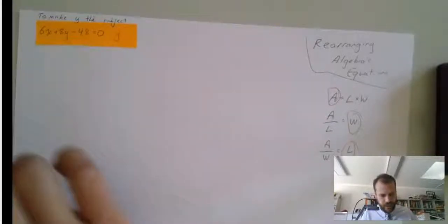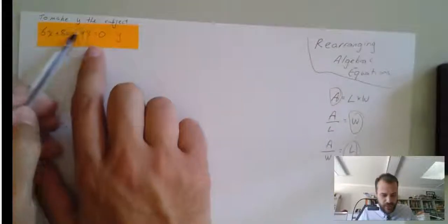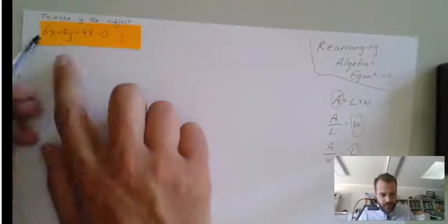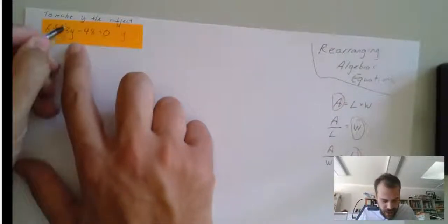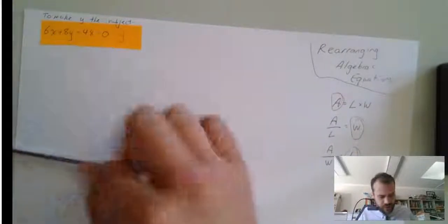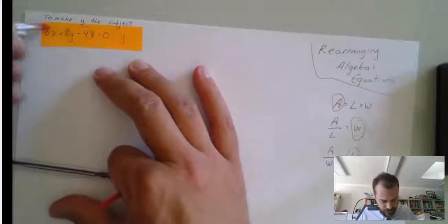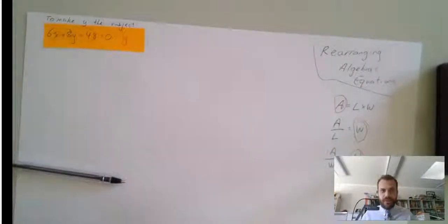We need to make y the subject, so we need to move this negative 48 to the other side, we need to get rid of the 6x onto the other side, and we need to get rid of the 8. So, those are the things that are stopping us from having y by itself.